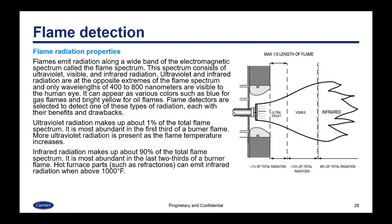Flame detectors are selected to detect one of these types of radiation, and each will have benefits or drawbacks. Ultraviolet radiation makes up only about one percent of the total flame spectrum and is most abundant in the first third of a burner flame. More ultraviolet radiation is present as the flame temperature increases. Infrared radiation makes up about 90 percent of the total flame spectrum and is most abundant in the last two-thirds of a burner flame. Hot furnace parts such as refractories will begin emitting infrared radiation when above 1,000 degrees Fahrenheit.